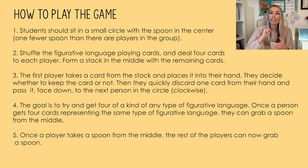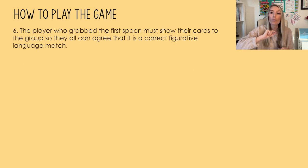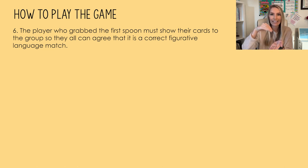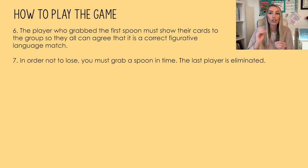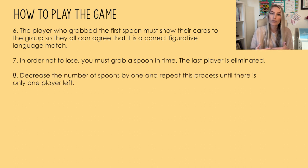Once a player gets four cards representing the same type of figurative language, they can grab a spoon from the middle. Once one player takes a spoon, the rest of the players can also grab a spoon — even if they don't have four matching cards. The player who grabbed the first spoon needs to show their cards to the group so everyone can confirm it's a correct match. You can also have an answer key for any disagreements. The last player who fails to grab a spoon is eliminated, similar to musical chairs. Decrease the number of spoons by one and repeat until only one player remains.